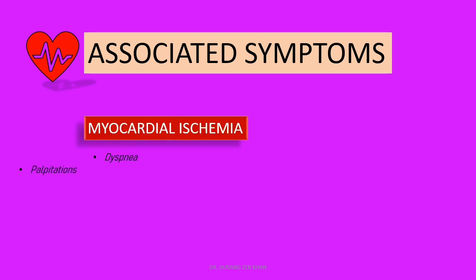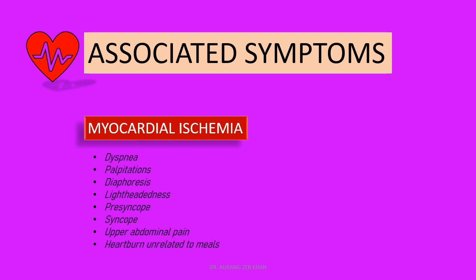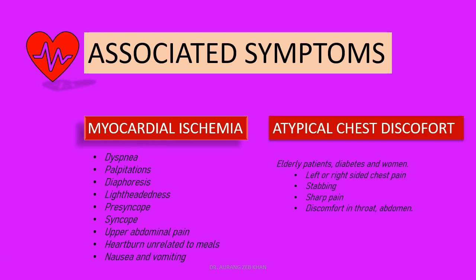Coming to associated symptoms, symptoms associated with myocardial ischemia are dyspnea, palpitations, diaphoresis or excessive sweating, lightheadedness, presyncope, syncope, upper abdominal pain, heartburn unrelated to meals, and nausea and vomiting. Atypical chest discomfort can occur in elderly patients, in patients with diabetes, and in women. For example, they can have left or right-sided chest pain instead of central or retrosternal chest discomfort. Their pain can be stabbing instead of the classical tightness, squeezing, or pressure symptoms, or they can have sharp pain or discomfort in the throat or abdomen.